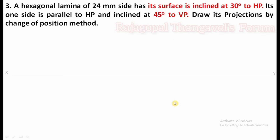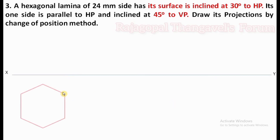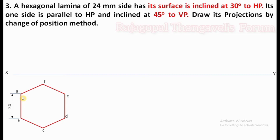First of all, draw the XY reference line and draw the hexagon for the side of 24mm. We can give names to all the corners as A, B, C, D, E, F as per your wish. You can also use different notations.